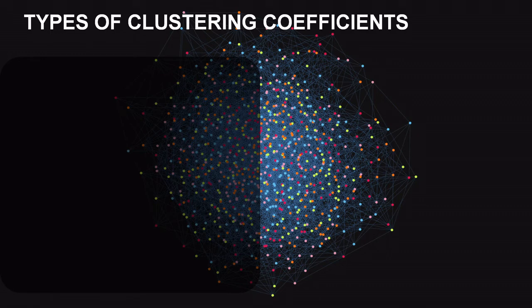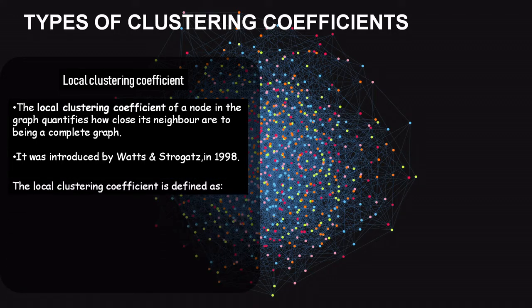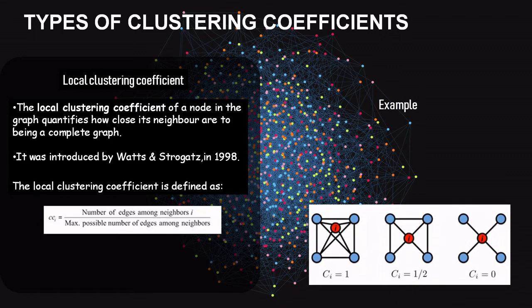Local clustering coefficient: the local clustering coefficient of a node quantifies how close its neighbors are to forming a complete graph. Its formal definition is: number of edges among the neighbors divided by the maximum possible number of edges among the neighbors.